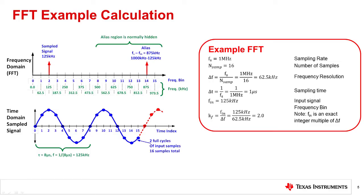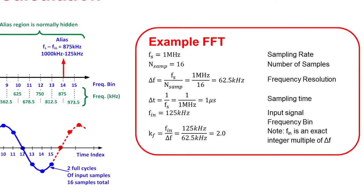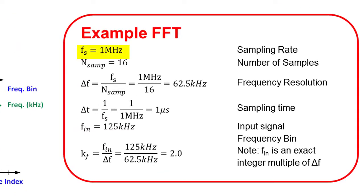Let's step through some basic math for an example FFT. First, notice that we have a 1 megahertz data converter sampling rate. Next, we collect a total of 16 digitized time domain samples. The frequency resolution for this FFT is 1 mega sample per second divided by 16, or 62.5 kilohertz.